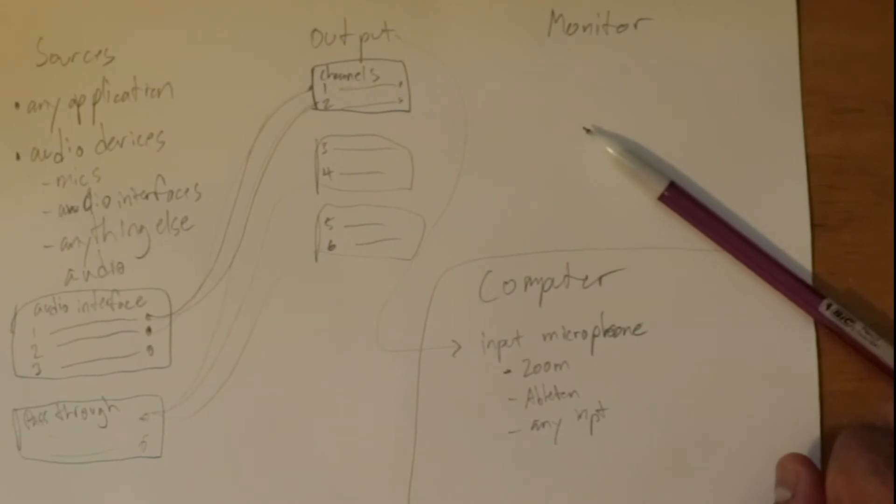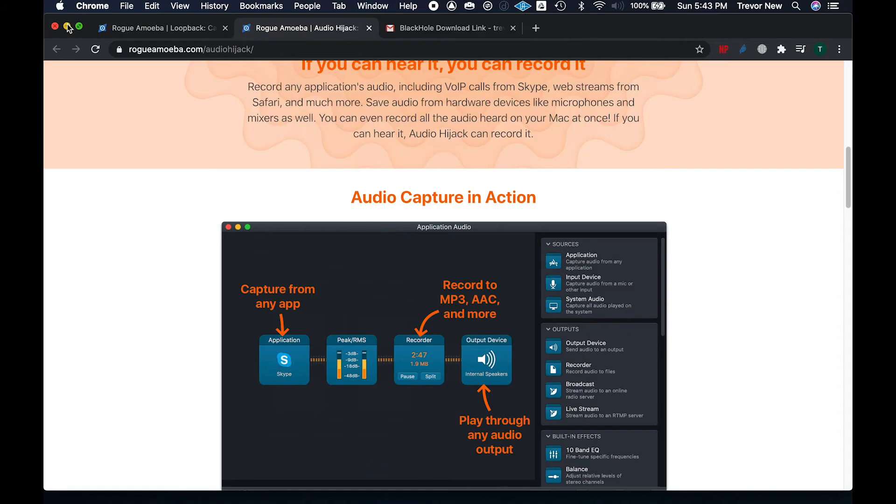That's how Loopback works — that's the basic concept. You're taking the output from one thing and sending it through either Black Hole, Loopback, or Audio Hijack, and then from there it goes to the input of another device. Output a sound to your routing software, it goes through the software, then into the input of another thing. Pretty straightforward.